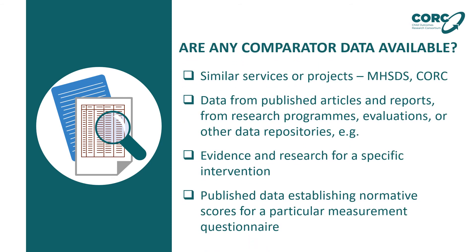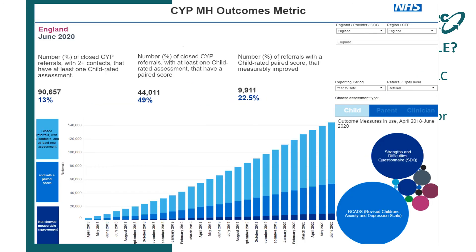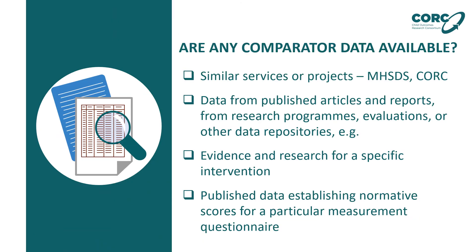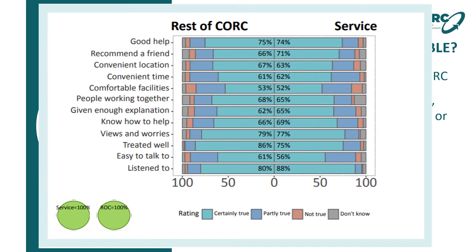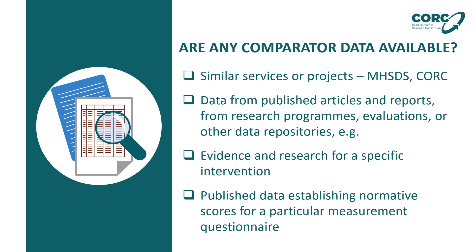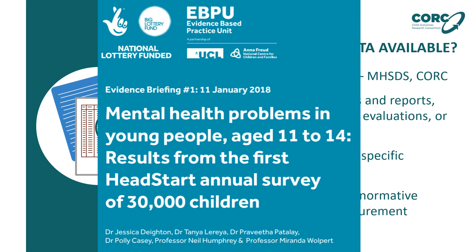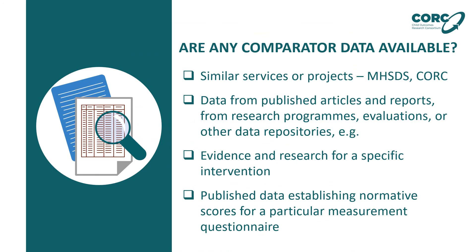We would like to acknowledge the benefits of comparator data in interpreting the information being presented. Comparators allow for benchmarking and contextualising results against what is normal, expected, or within reasonable parameters. You may be able to source this from data repositories such as the Mental Health Services dataset held by NHS Digital, or by receiving a Cork report where we present your service's results against our dataset, currently the largest of its kind in the country. There will also be published articles and reports about outcomes seen in particular research programmes and evaluations, such as the National Lottery Community Fund's programme Head Start. There may be a large evidence base for that specific intervention, and research might cite expected effect sizes or levels of impact for comparison, or the measurement tool itself may have published research detailing what clinical or reliable change scores would be for that particular scale.